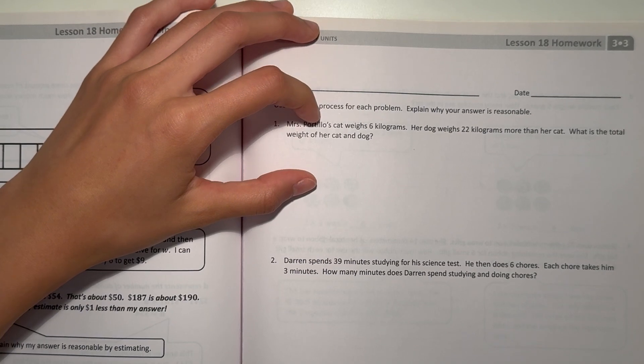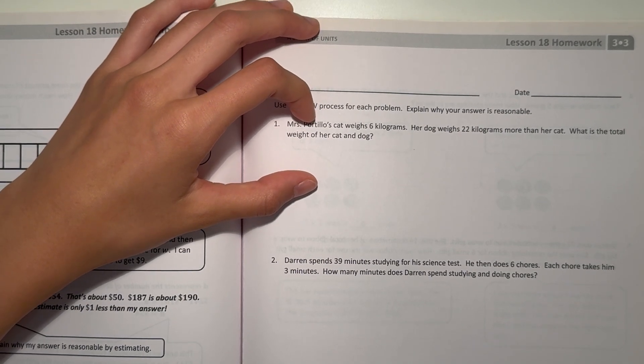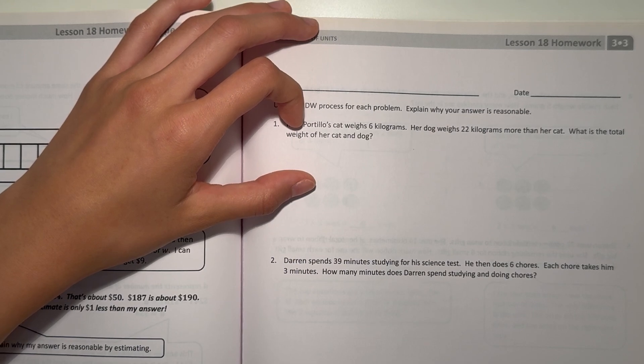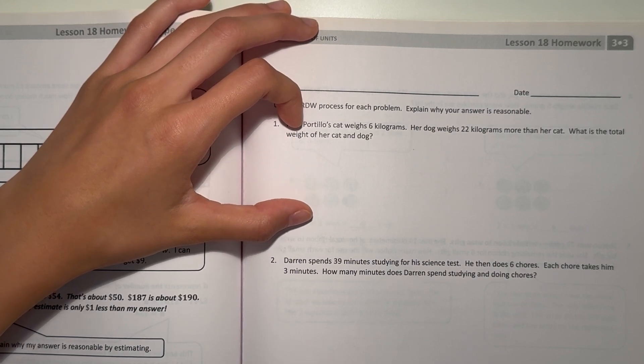Number one, Mrs. Portillo's cat weighs 6 kilograms. Her dog weighs 22 kilograms more than her cat. What's the total weight of her cat and dog?